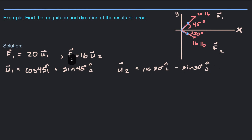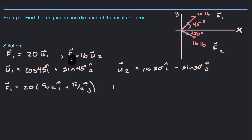We could say cosine of negative 30 is the same as cosine of 30, and sine of negative 30 degrees is negative sine of 30 degrees. Either way, you're going to end up with a y component that's negative for this second unit vector. So now we can get our forces. F1 is going to equal 20 times cosine(45), which is √2/2, î, plus sine(45), which is also √2/2, ĵ. F2 is going to equal 16 times cosine(30), which is √3/2, î, and sine(30) is one-half, so it's negative one-half ĵ.